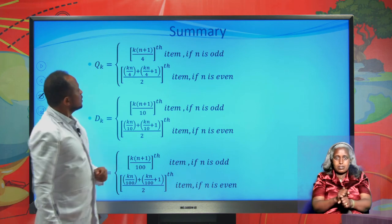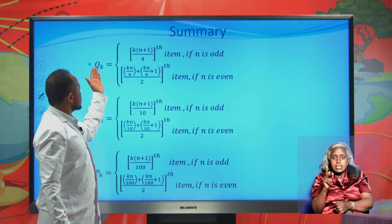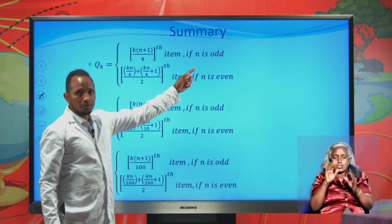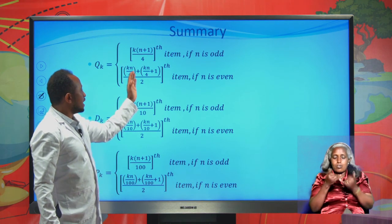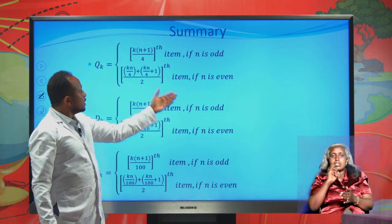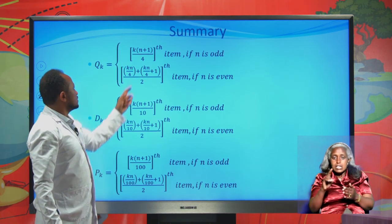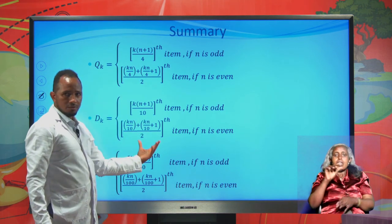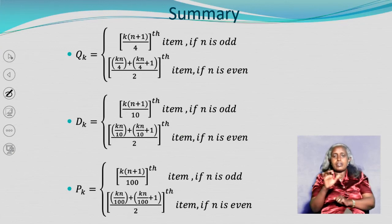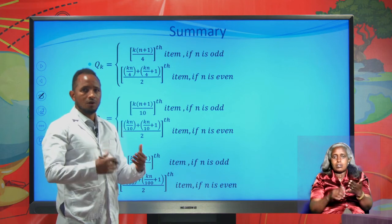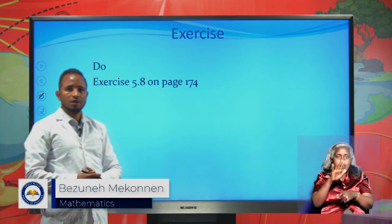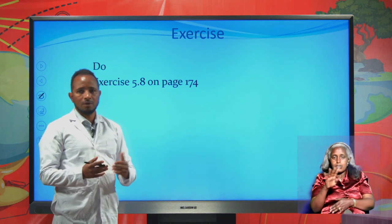To summarize: the k-th quartile is k(n+1)/4's item if n is odd, or the average of kn/4 and kn/4+1 items if n is even. For deciles, change the 4 to 10. For percentiles, change the 4 to 100. This is all about today's lesson. Please do exercise 5.8 on page 174. Goodbye.